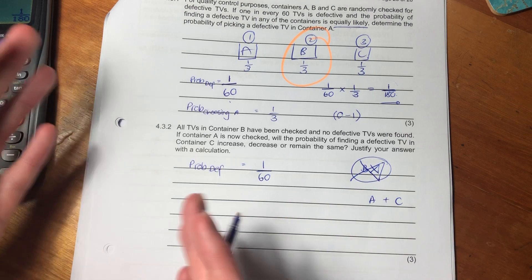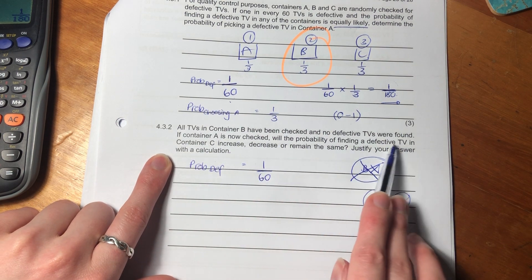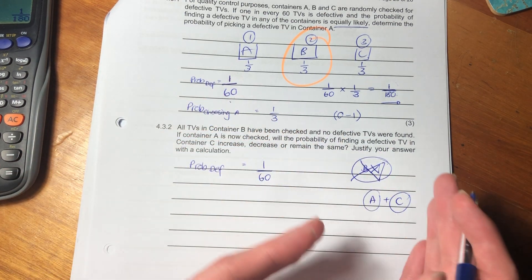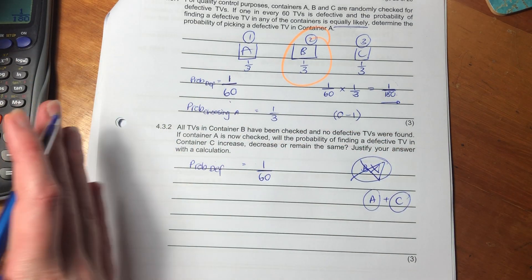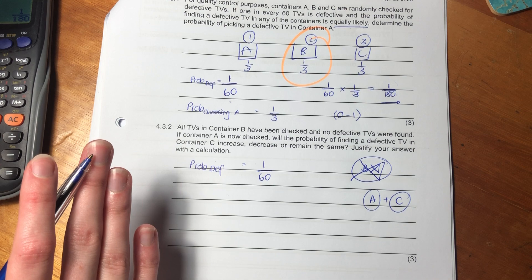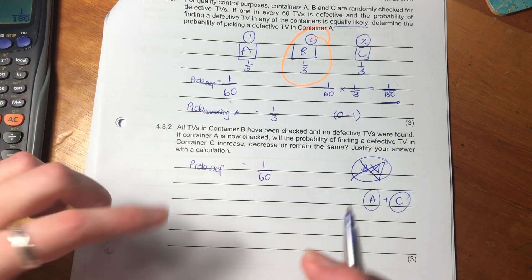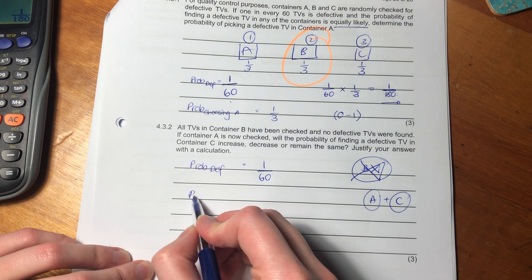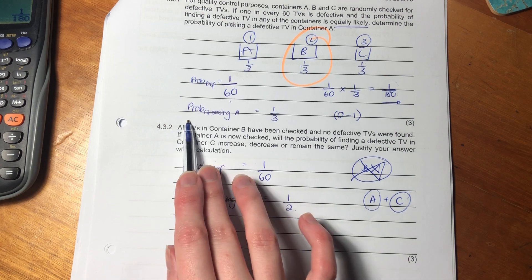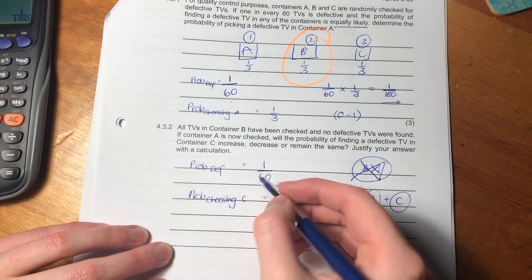But it says, if container A is now checked, will the probability of finding a defective TV in container C increase, decrease, or remain the same? Justify your answer with a calculation. So this is an interesting one, because we still know that the probability of a TV being defective is 1 in 60. But now we're taking B out of the scenario, because B has already been checked. So the reason I put X there is because we're taking it out. It's no longer in the scenario. What is left is just A and C. So there's only two options you can choose from the containers. You can either choose A or you choose C. So when it says here, will the probability of finding a defective TV in container C increase, decrease, or remain the same?